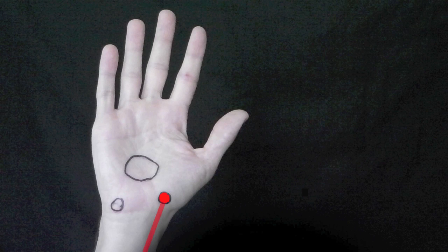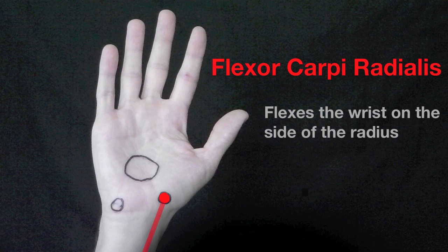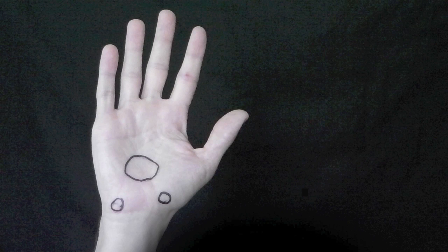Let's look at this muscle. It's a flexor because it's on the palm side, and it's also on the side of the radius. So the name of this muscle is flexor carpi radialis, which means it flexes the wrist on the side of the radius. So that gives you a sense of the naming convention.